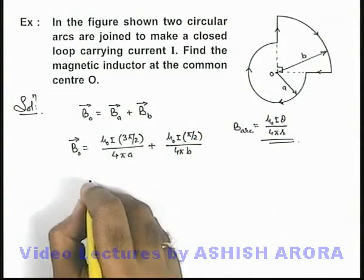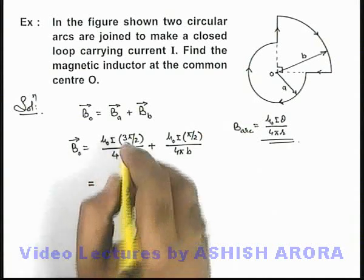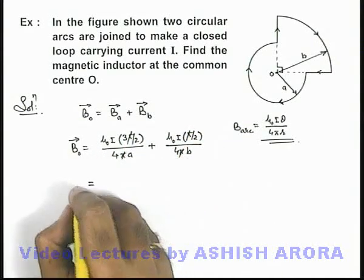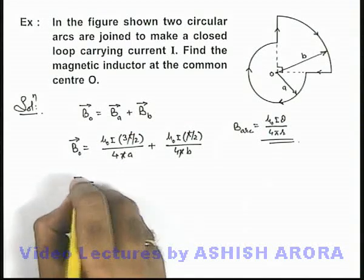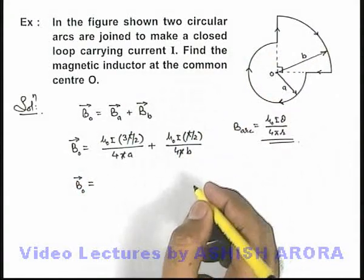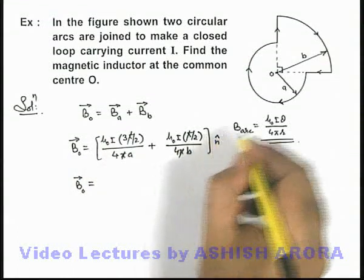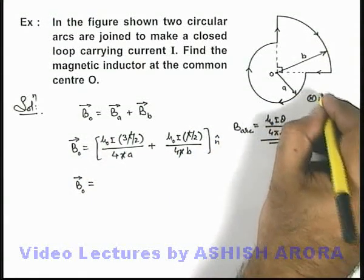Now in this situation here, π gets cancelled out. And in the result of magnetic induction at origin, it will be in inward direction. So we can also put a unit vector n̂ where n̂ is in inward direction here.